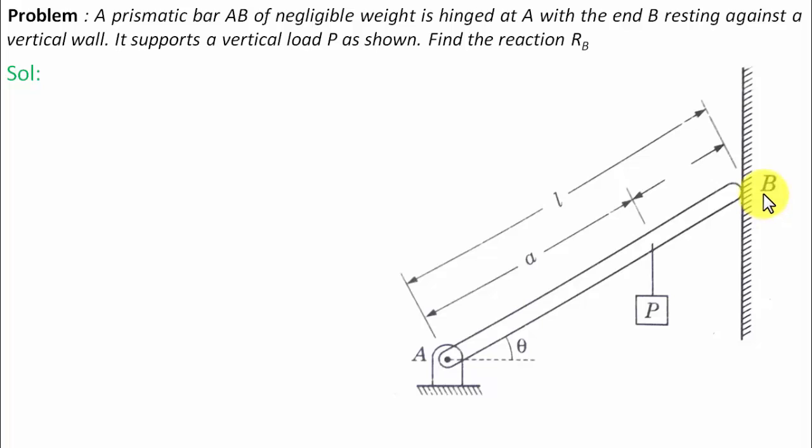Let us try to understand this arrangement. There is this bar AB which is resting onto this vertical wall. There is a force P acting in the downward direction at a distance of a from this hinge. Now there is a hinge over here, and hence you're going to have two forces HA and VA.